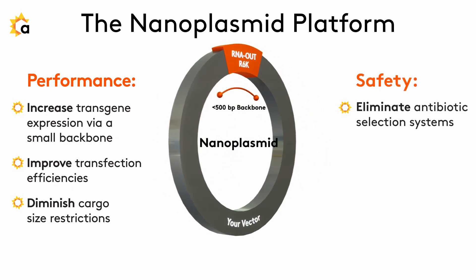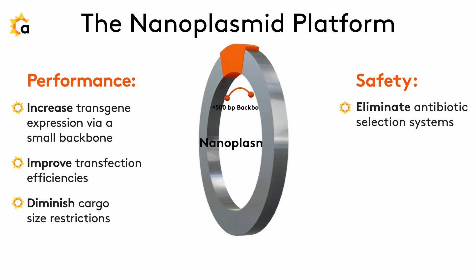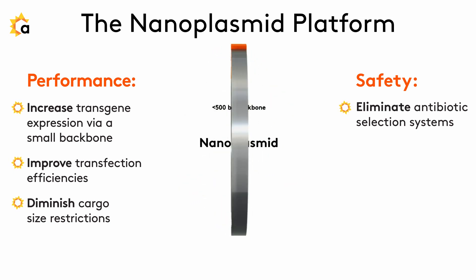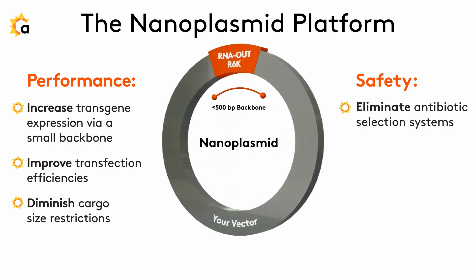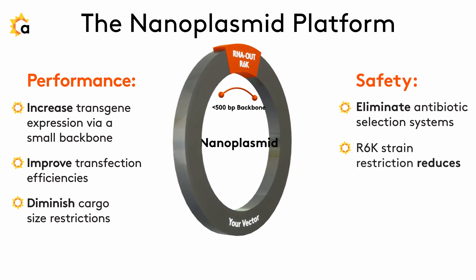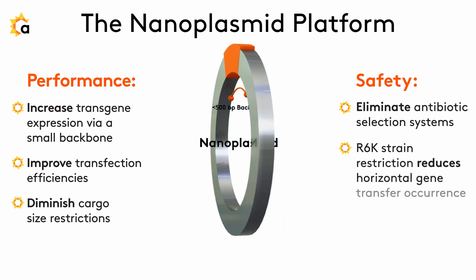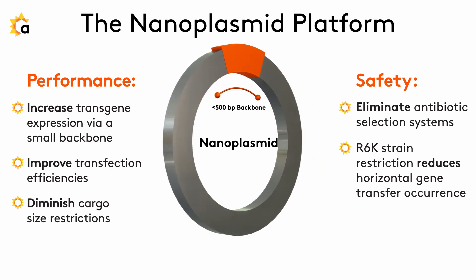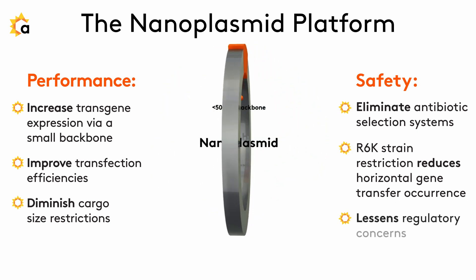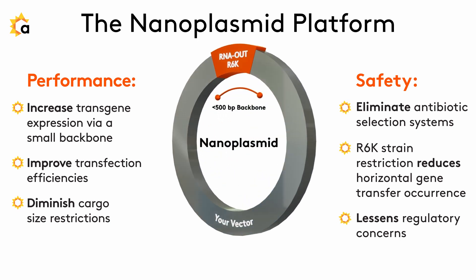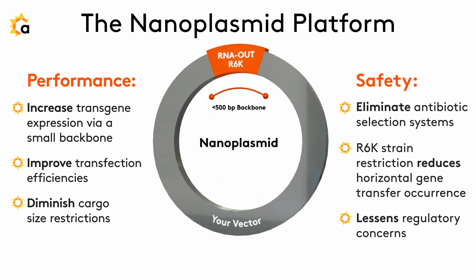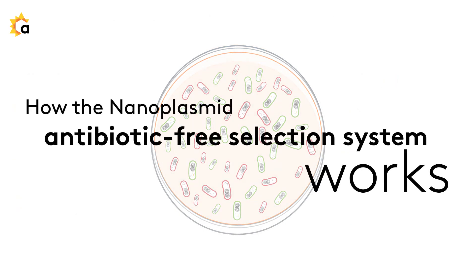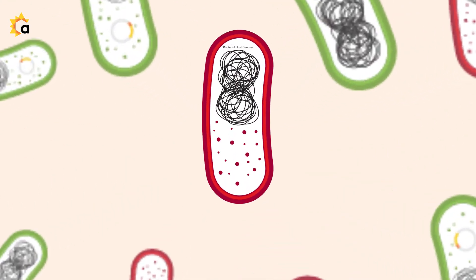Increase safety by eliminating antibiotic selection systems that could lead to antibiotic resistance gene transfer or hypersensitivities, often seen with other conventional plasmids. NanoPlasmid is r6k strain restricted, which reduces the possibility of horizontal gene transfer into the environment or the commensal bacteria found in patients, further enhancing its safety and lessening regulatory concerns.